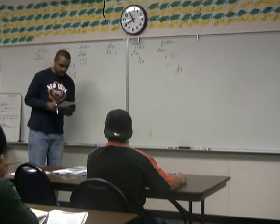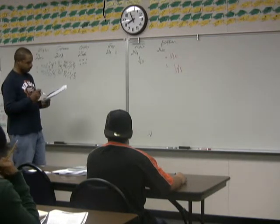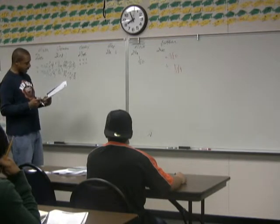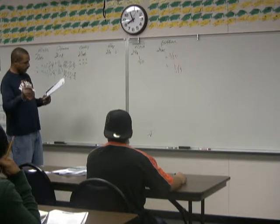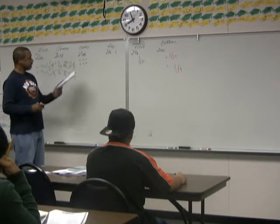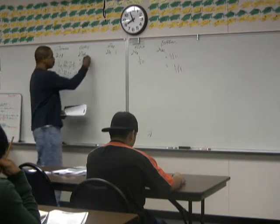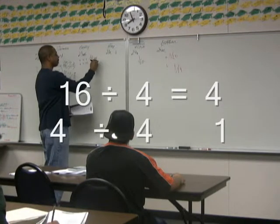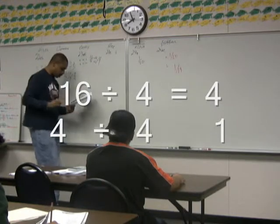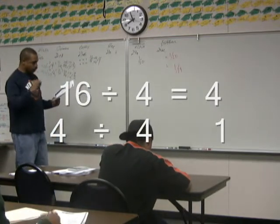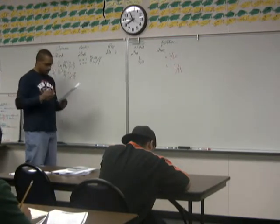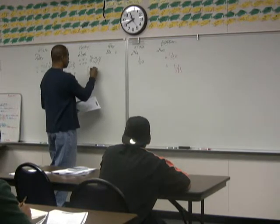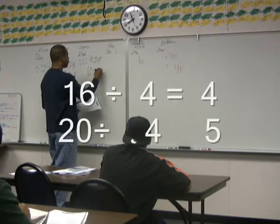Denzel answered 16 questions correctly and 4 questions incorrectly. 23A: what is the ratio of correct to incorrect — 16 to 4? Take a 4 out: 4 to 1. 23B: what is the ratio of correct to total — 16 to 20? Take a 4 out: 4 to 5.